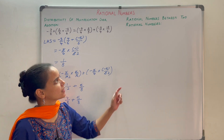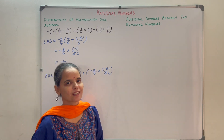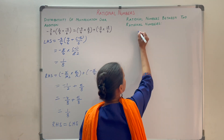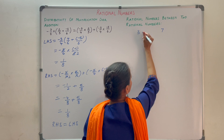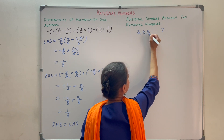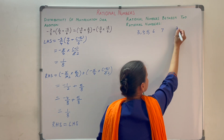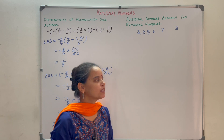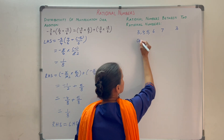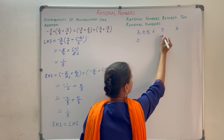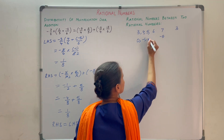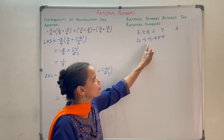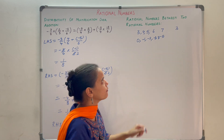Now let us discuss rational numbers between two rational numbers. If I ask how many natural numbers are there between 3 and 7, you will say 4, 5, 6 — so there are 3 natural numbers. If I ask how many integers are there between 0 and minus 5, you will say minus 1, minus 2, minus 3, minus 4 — so there are 4 integers.